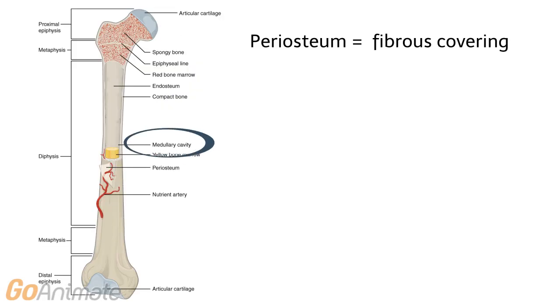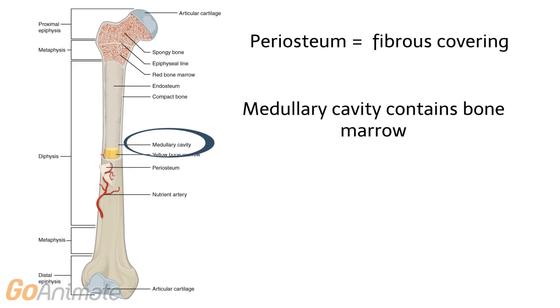The outer surface of bone contains a fibrous covering called the periosteum, which contains blood vessels, nerves, and lymphatics. The medullary cavity is lined with the endosteum and contains marrow.